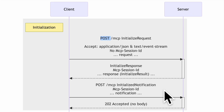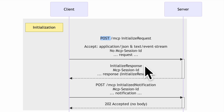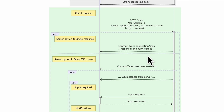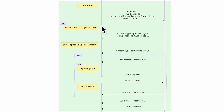The client sends the MCP session ID and the notification in the body, and the server responds with an HTTP 202 Accepted response confirming it received the notification. That completes the initialization phase.